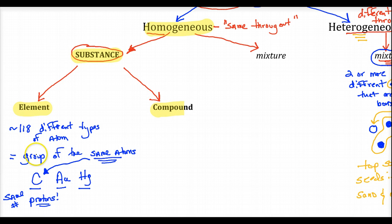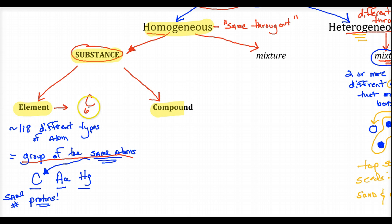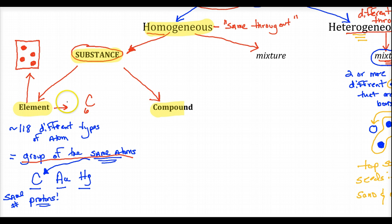An element is a group of the same type of atoms. If I make a model — a box of red circles each representing carbon — all the symbols would be the same, meaning they all have the same number of protons. That box is homogeneous because it's made up of the same things throughout.